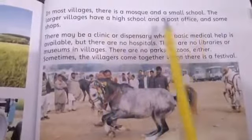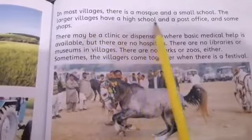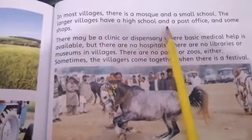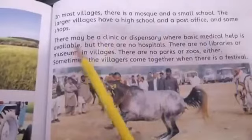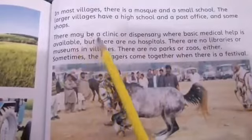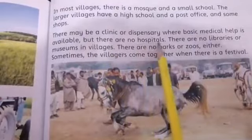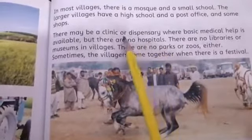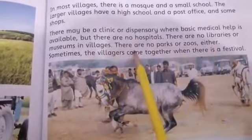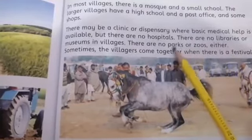In most villages there is a mosque and a small school. Larger villages have a high school, a post office, and some shops. There may be a clinic or dispensary where basic medical help is available. But there are no hospitals, no libraries, no museums, no parks, and no zoos.